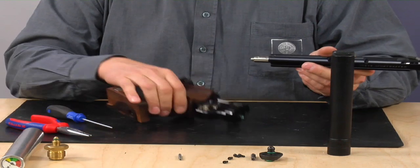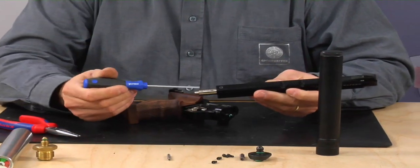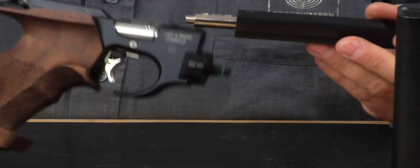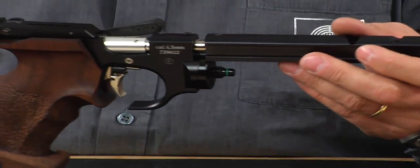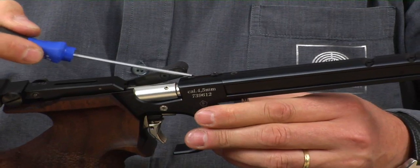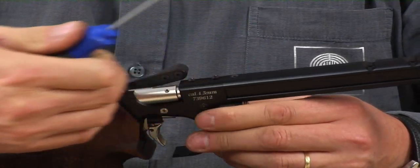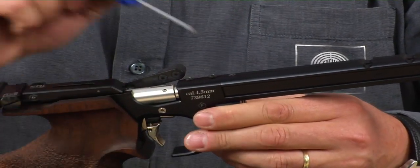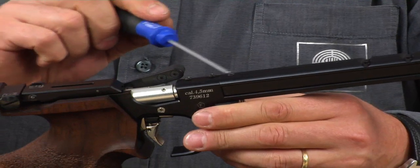The correct installation of the barrel. The barrel has two eccentric countersunk holes. When inserting the barrel, the first screw pulls the barrel back into the housing. The second screw pulls it forward and secures it.